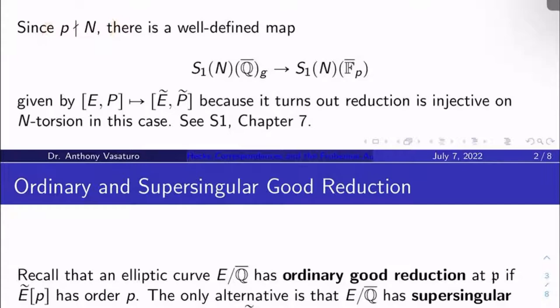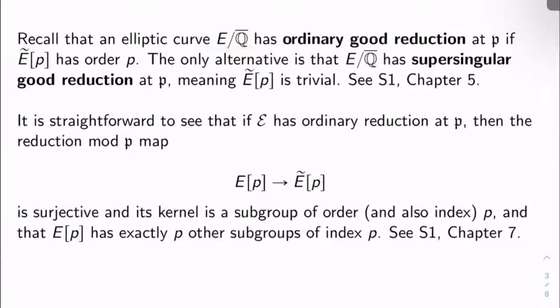Let's recall that an elliptic curve E over Q̄ has ordinary good reduction at ℘ if the p-torsion of its reduction Ẽ mod ℘ has order p, isomorphic to ℤ/pℤ as groups.